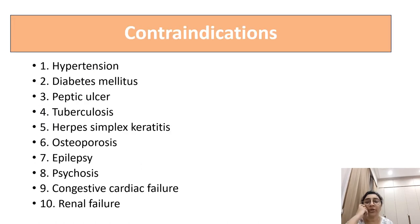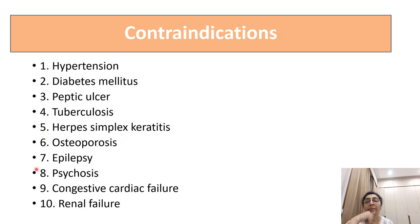Glucocorticoids are contraindicated in the following conditions: hypertension, diabetes, peptic ulcer, tuberculosis, herpes simplex keratitis, osteoporosis, epilepsy, psychosis, congestive cardiac failure, and renal disease. In all these conditions, corticosteroids are contraindicated.